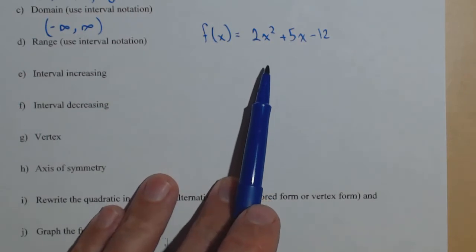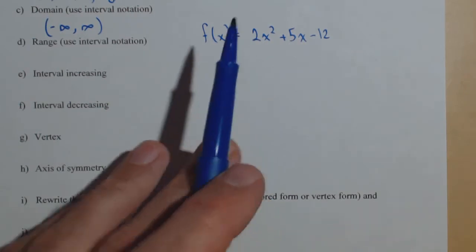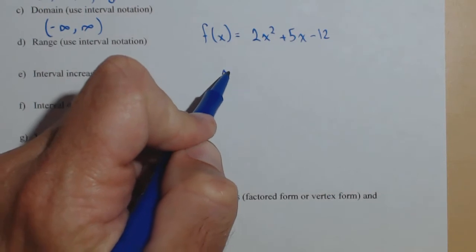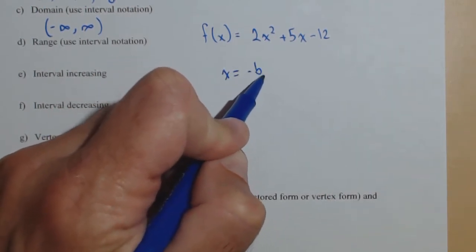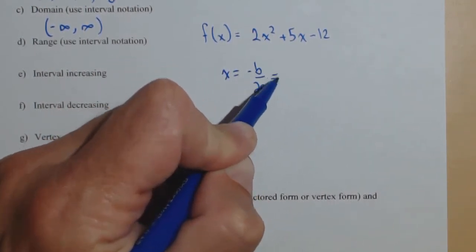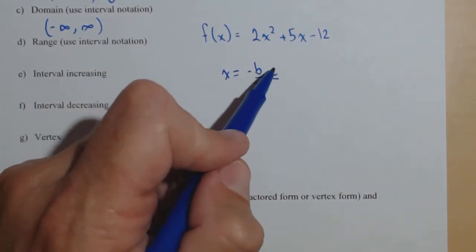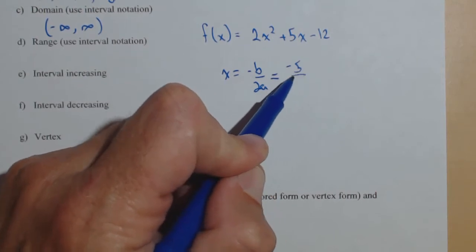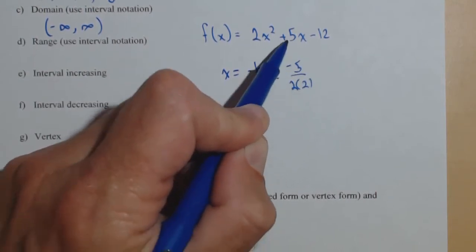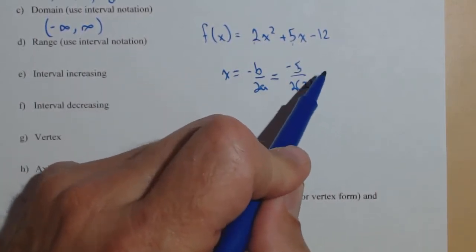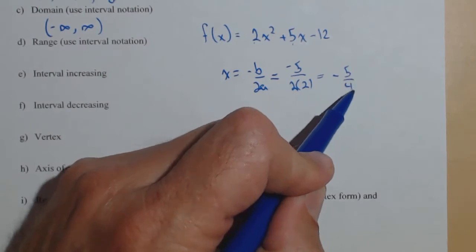So let's go ahead and just go ahead and find the vertex now. So the vertex, the x coordinate has that fancy little formula minus b over 2a. You could also graph it and get your vertex, but this will always be exact. So negative 5 over 2 times 2. So negative 5 fourths.